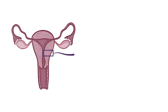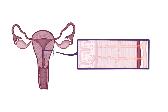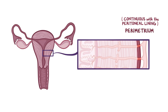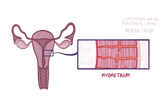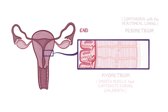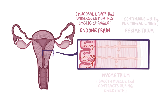The wall of the uterus has three layers: the perimetrium, which is a layer continuous with the lining of the peritoneal cavity; the myometrium, which is made of smooth muscle that contracts during childbirth to help push the baby out; and the endometrium, which is a mucosal layer that undergoes monthly cyclic changes.